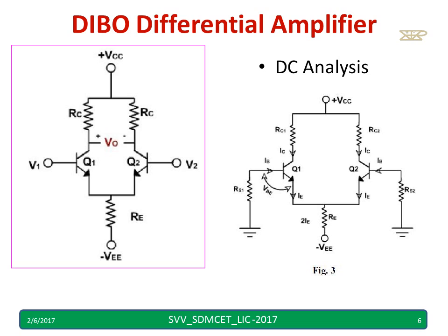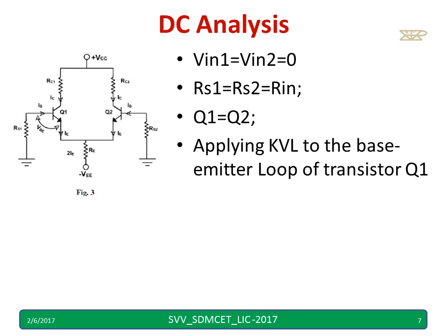This diagram shows a dual input balanced output differential amplifier. Let us perform a DC analysis for this circuit. We assume V1 and V2 equal to 0. As we know, whenever we do DC analysis, we make AC equal to 0. The internal resistance, which is very small for both sources, RS1 and RS2, we take as RIN, and we assume Q1 is equal to Q2, meaning we have matched transistors.